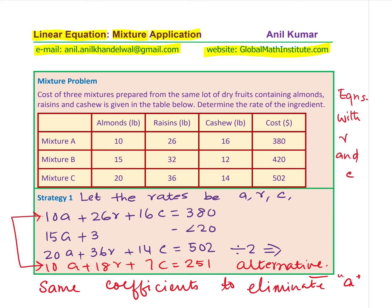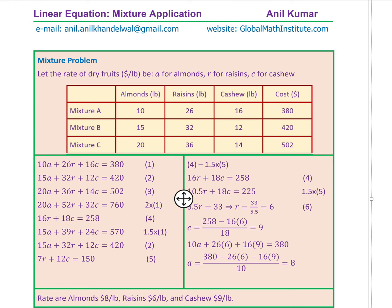Pause the video, answer the question, then look at my calculations. I've made the table and set up our equations as discussed: 10a + 26r + 16c = 380 (equation 1), where 'a' is almonds, 'r' is raisins, and 'c' is cashews in dollars per pound. Similarly, equation 2 is 15a + 32r + 12c = 420, and equation 3 is 20a + 36r + 14c = 502, with a, r, c as variables.